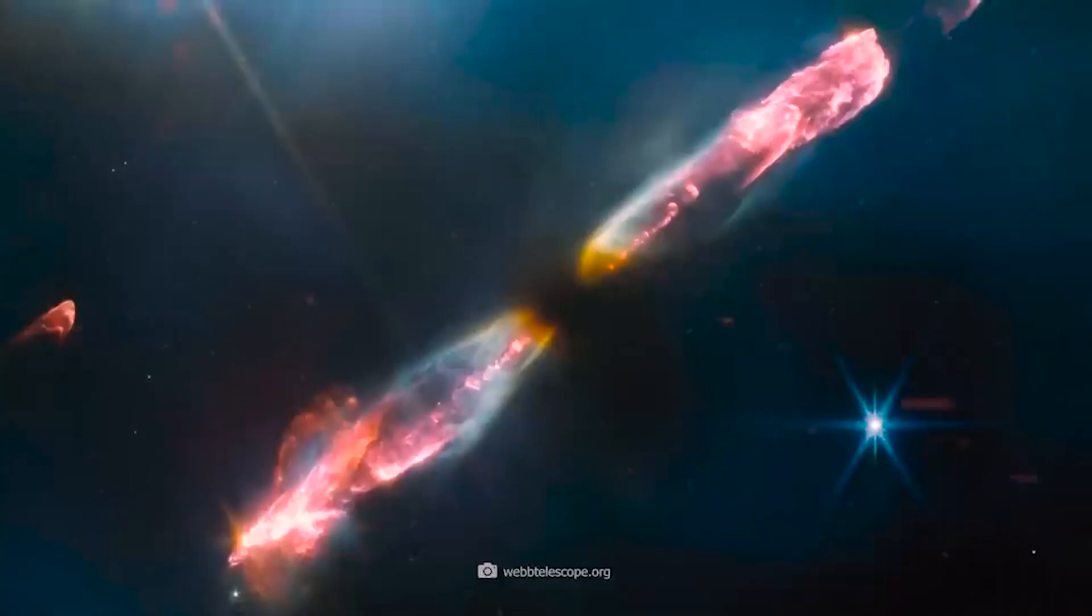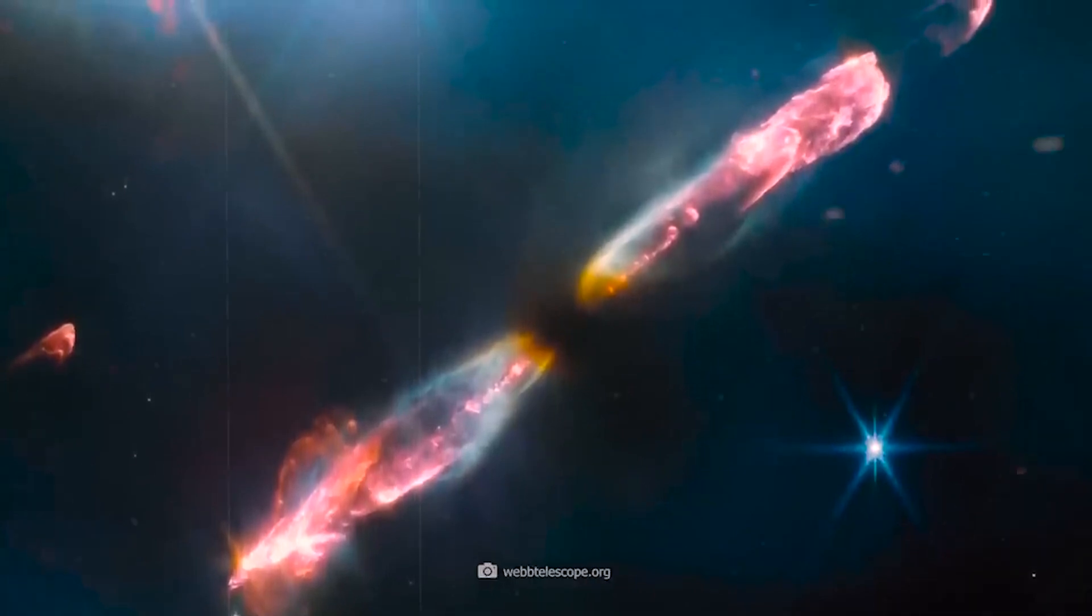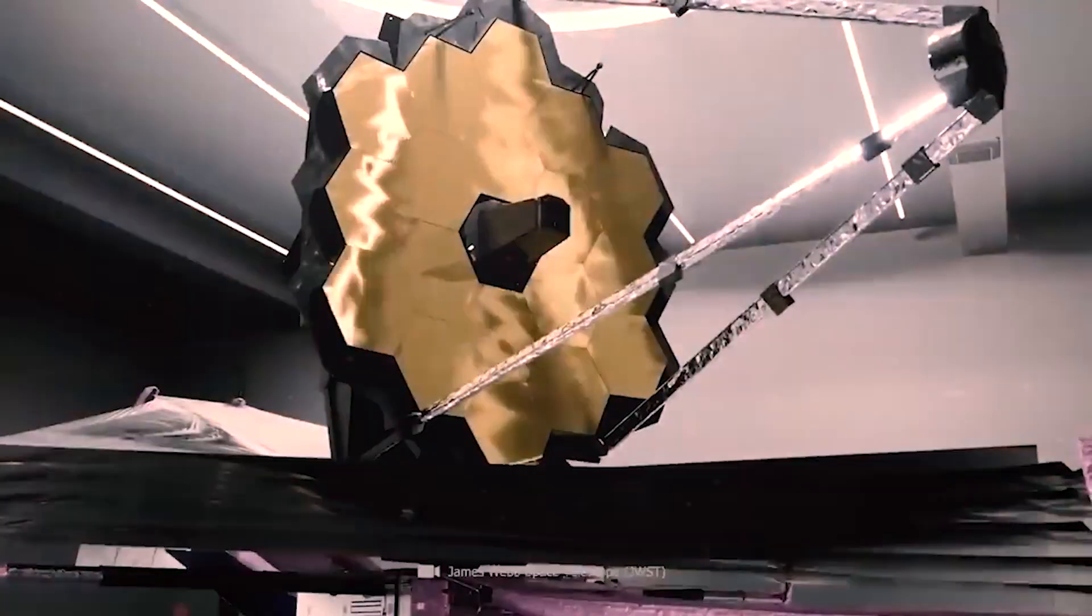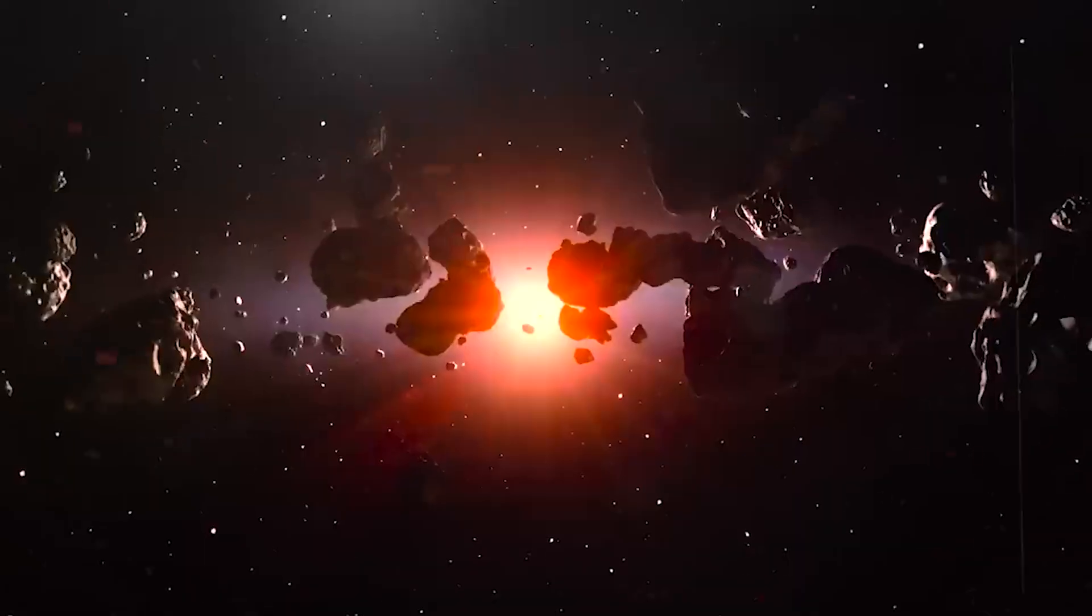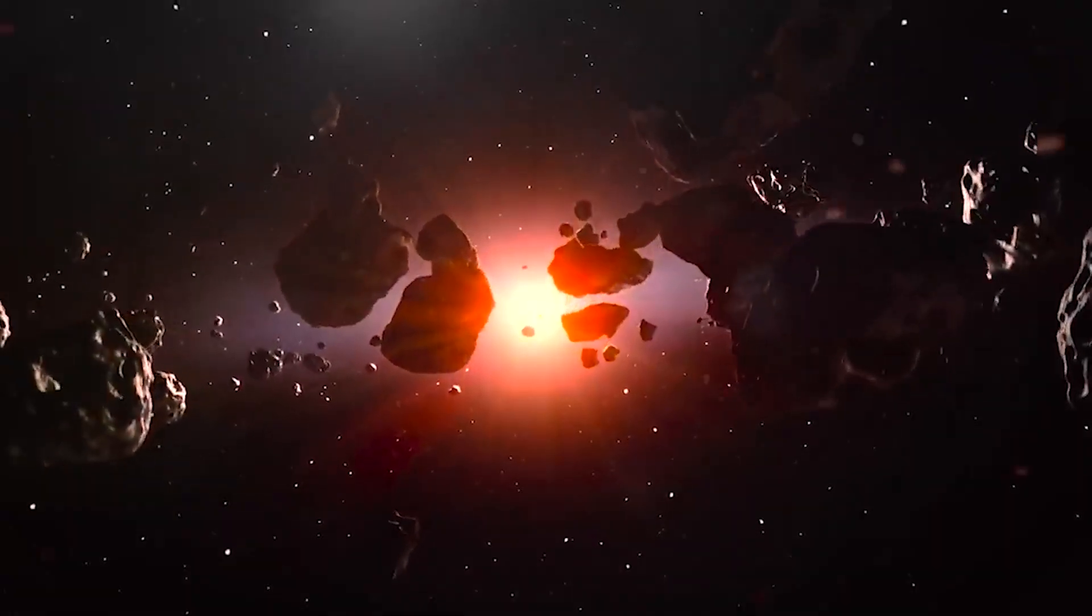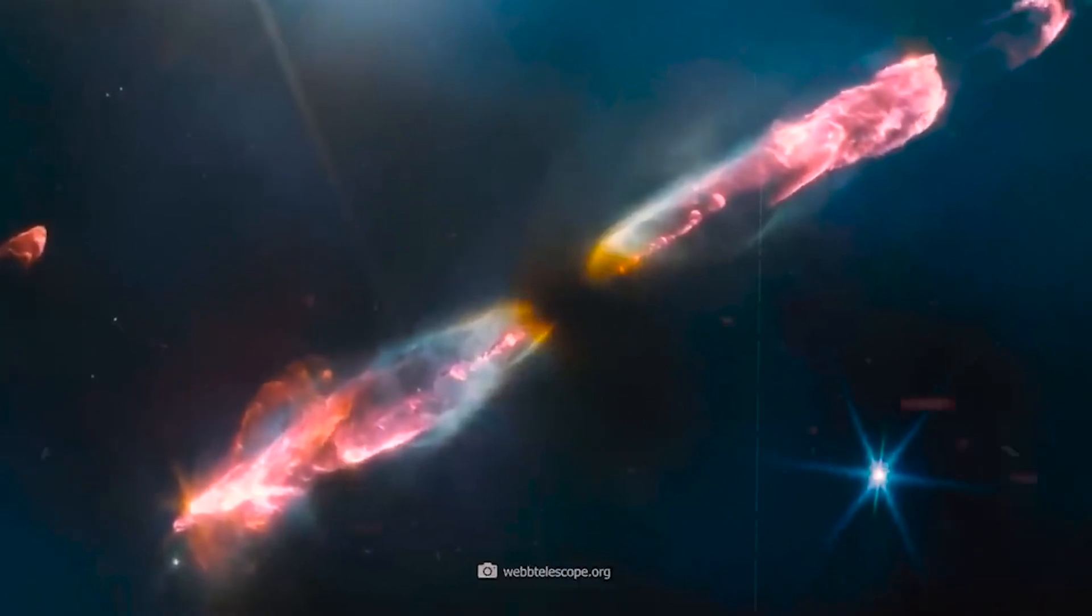But what did our young Sun look like? To catch a glimpse of our star shortly after its birth, we must turn our attention to Herbig-Haro. The James Webb Space Telescope has captured a breathtaking image of this star, providing us with a unique impression of what our Sun must have resembled during its early stages.